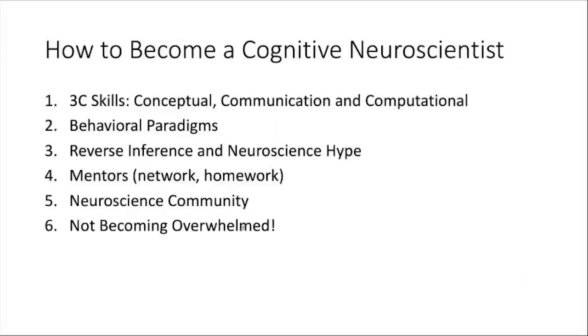People might feel overwhelmed by the complexity and many dimensions of cognitive neuroscience, but it is not true that it is too much. You will learn it eventually over time. This is the beauty of neuroscience — there are always new things to learn. Some scientific fields don't have that level of dynamic progress or complexity, but that is not true for neuroscience.